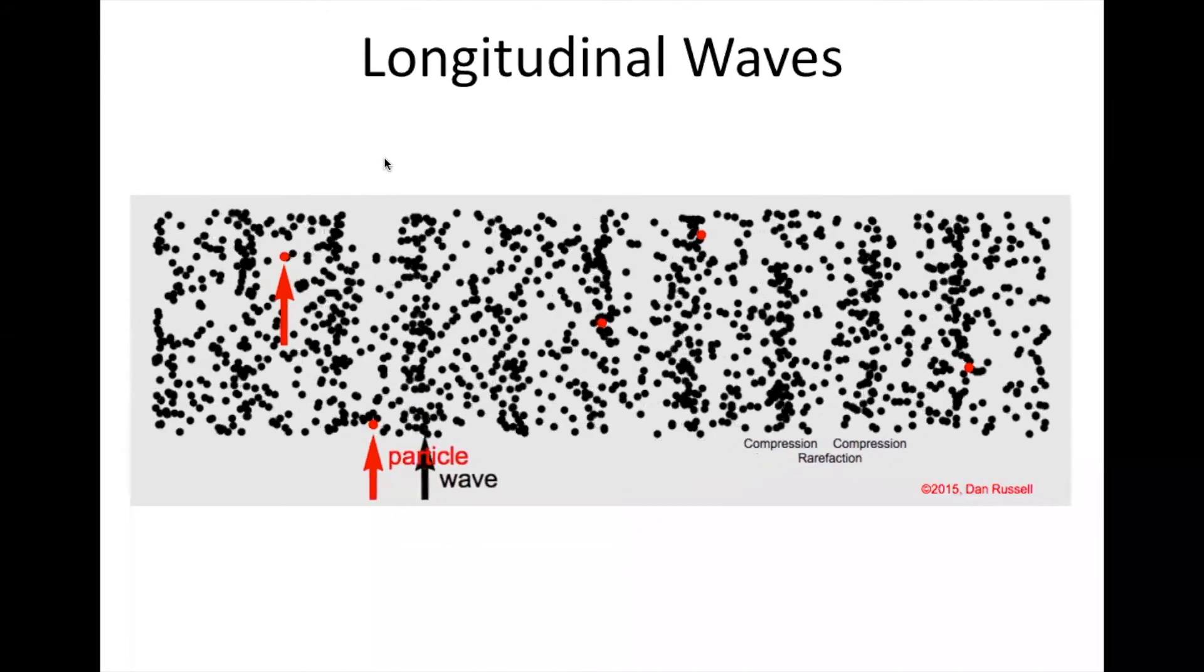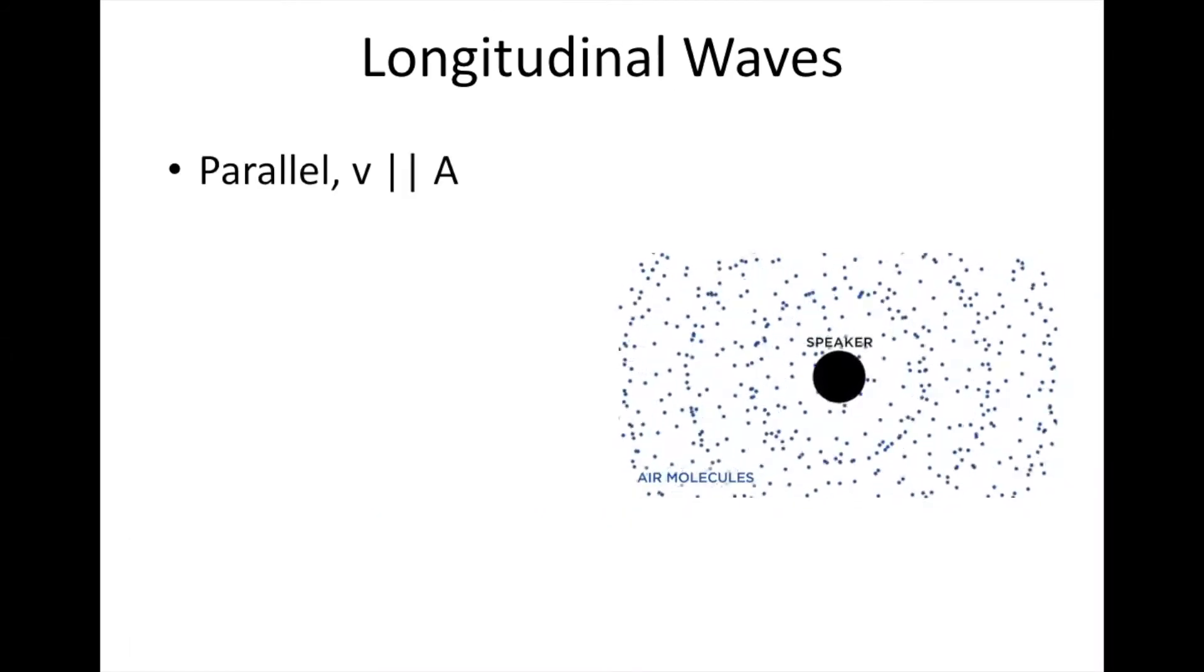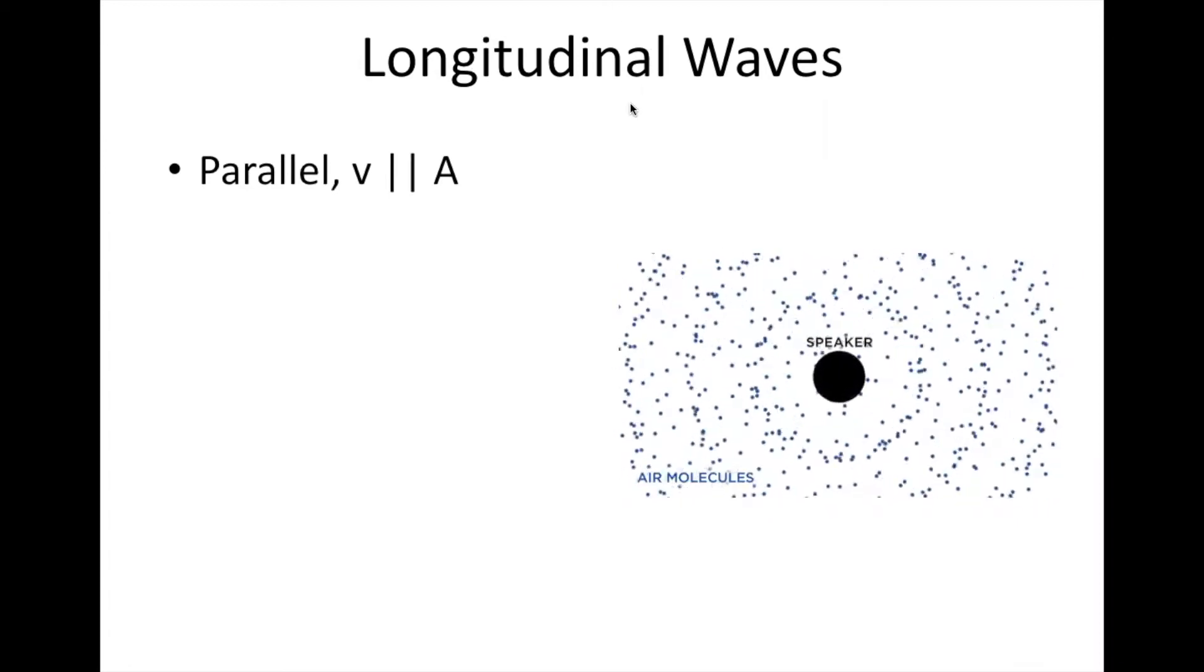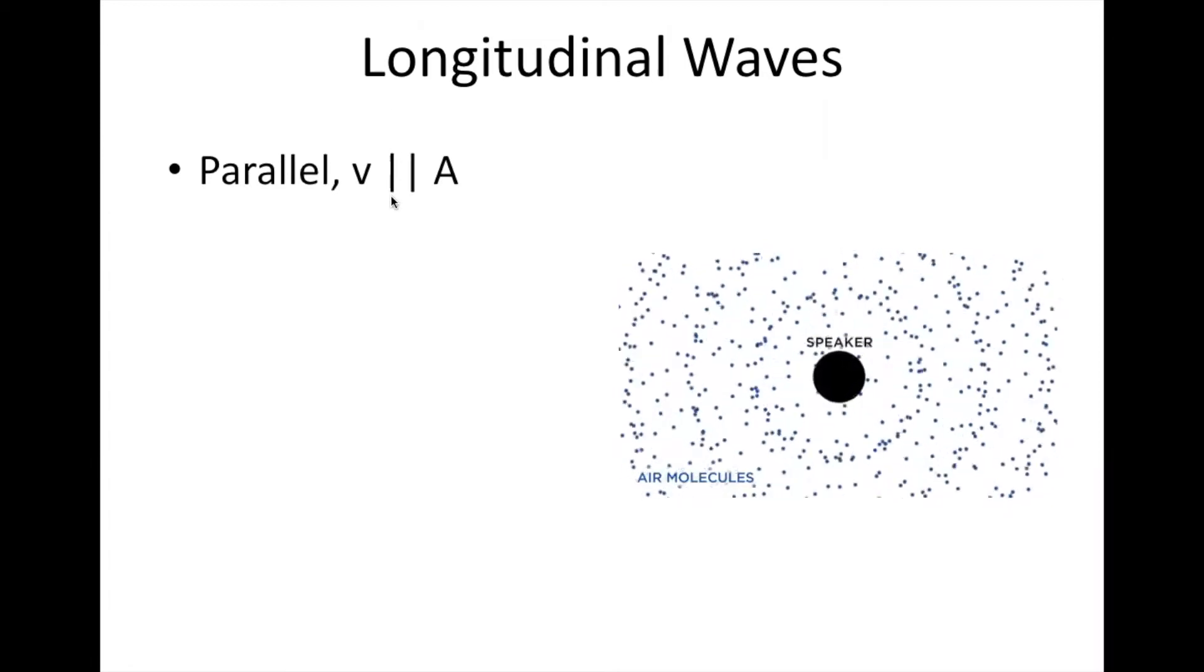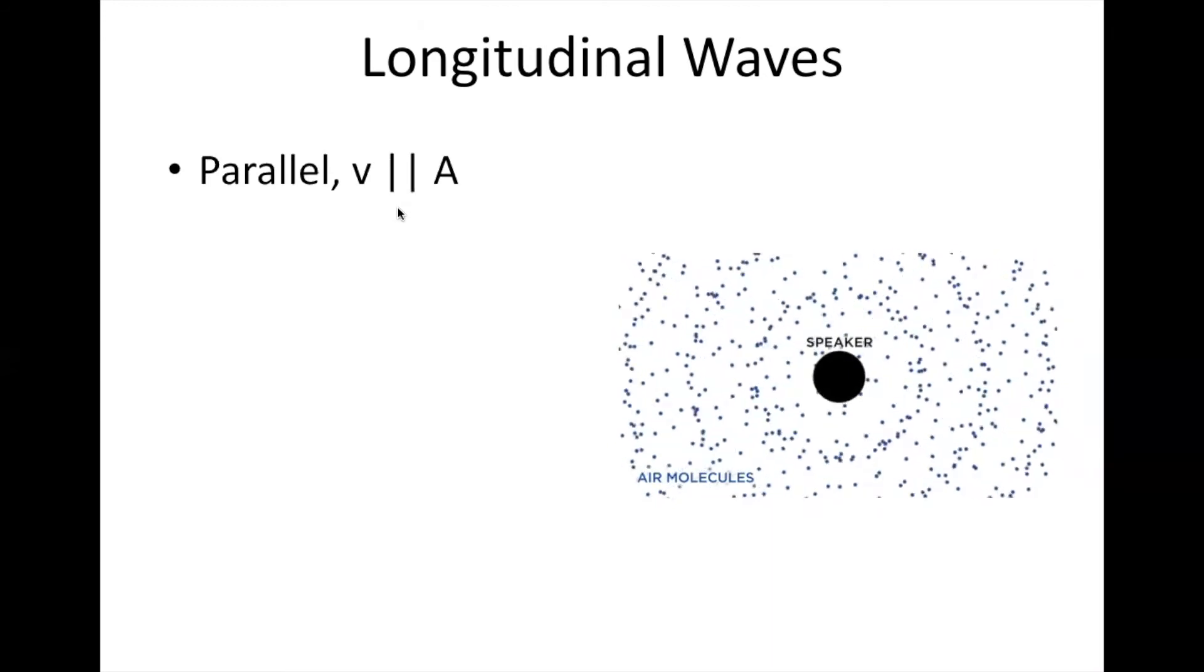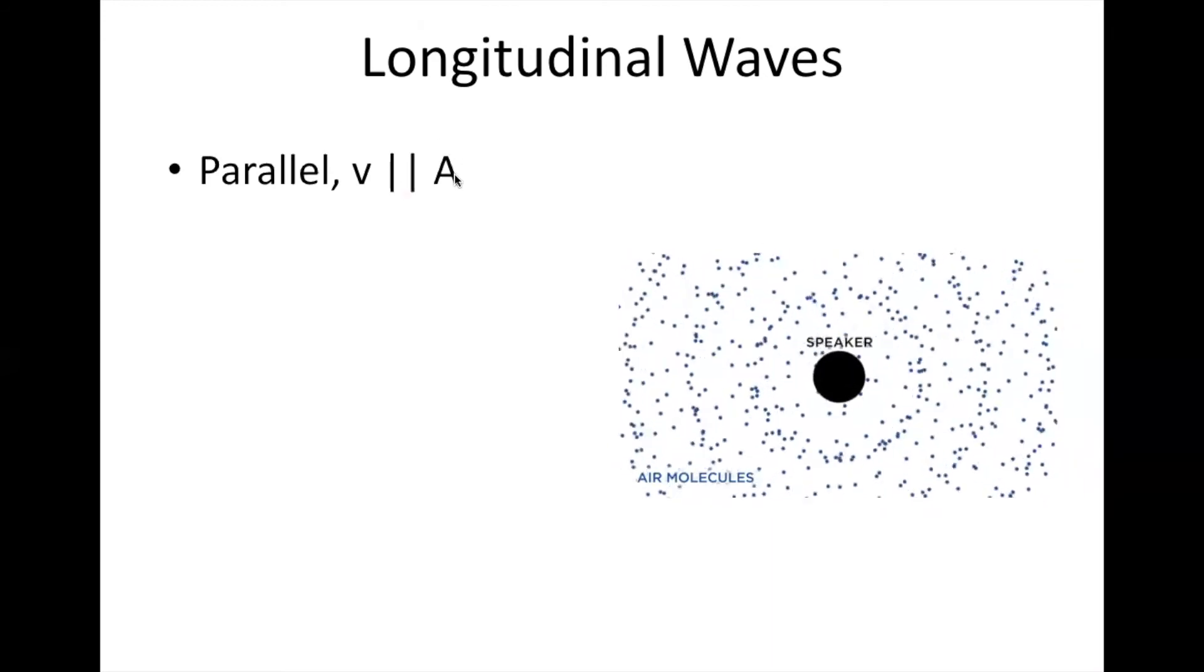You can remember this because longitudinal has two L's, making the parallel symbol. So for longitudinal waves, we can call these parallel waves. Longitudinal LL is parallel. The speed or velocity of the wave is parallel to the amplitude, or the motion back and forth, of the particles.